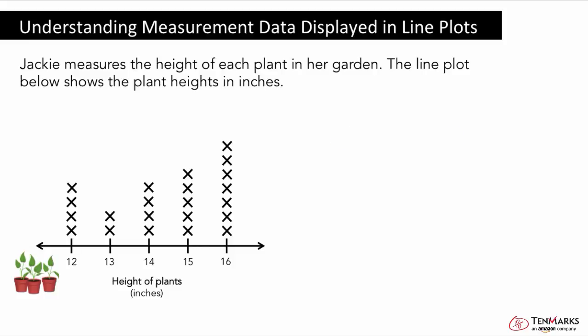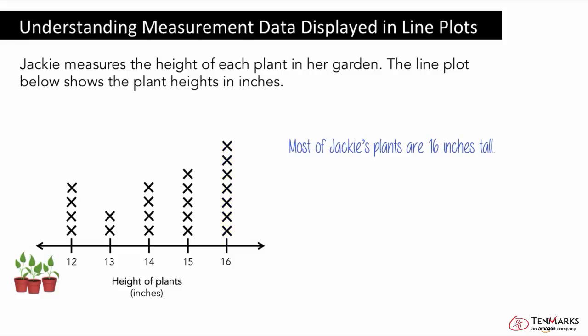This line plot can also show you how tall most of her plants are. Remember, the numbers below represent the heights of the plants in inches. The X's above each number on a line plot show how many objects have that height. We can see which column is tallest to find the most common height. Find the column with the most X's — it looks like most of Jackie's plants are 16 inches tall, with 7 X's.